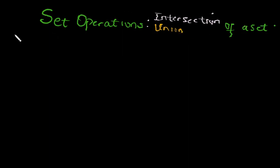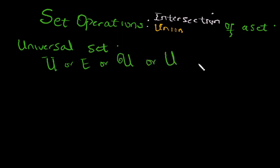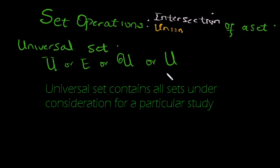But before I do that, let's have a brief understanding of what a universal set is. I'm sure you must have been hearing this in your set theory class. A universal set, usually depicted by U or E to mean entity, or simply a big U, is a set that contains all sets under consideration for a particular study.